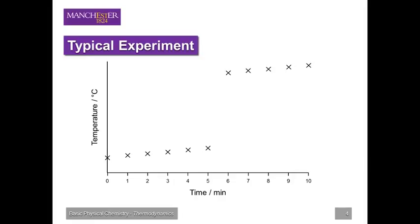Extrapolated linear trend lines are then fitted to the pre- and post-reaction data sets, and the temperature rise in the calorimeter is determined by graphical means. This is all explained in detail on the experimental sheet.